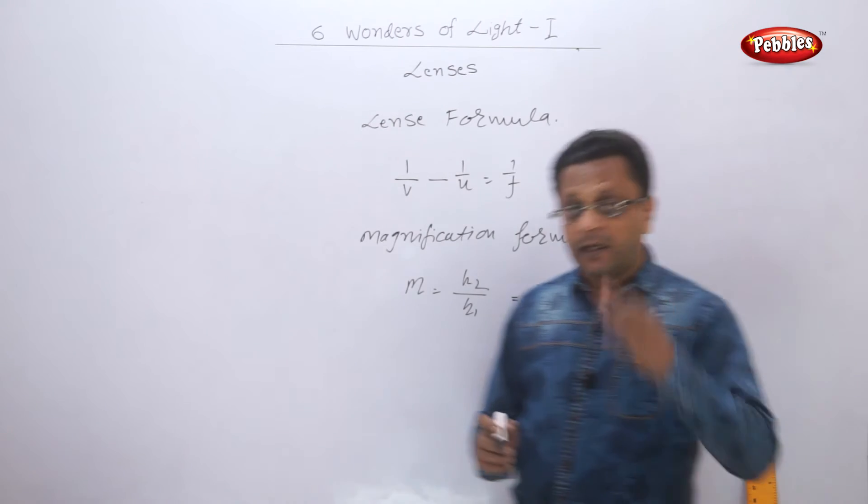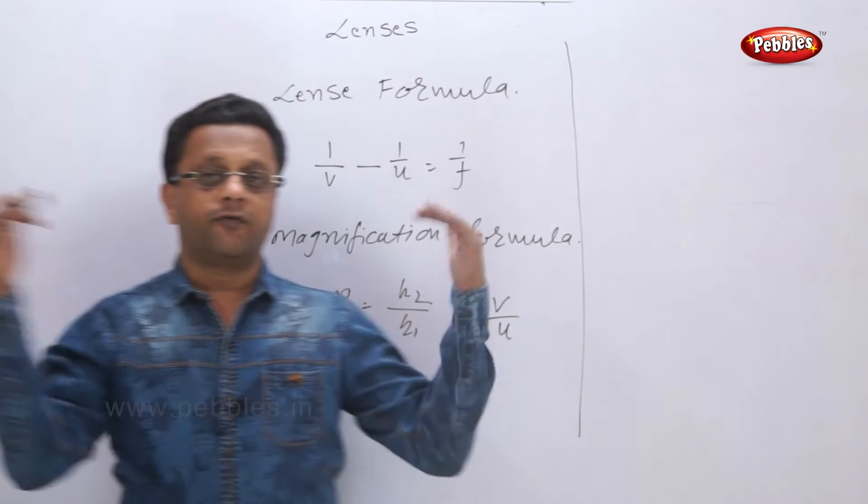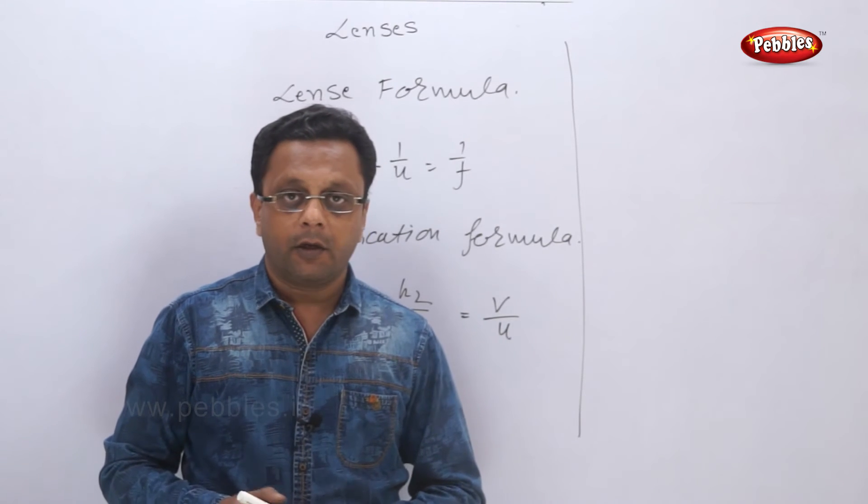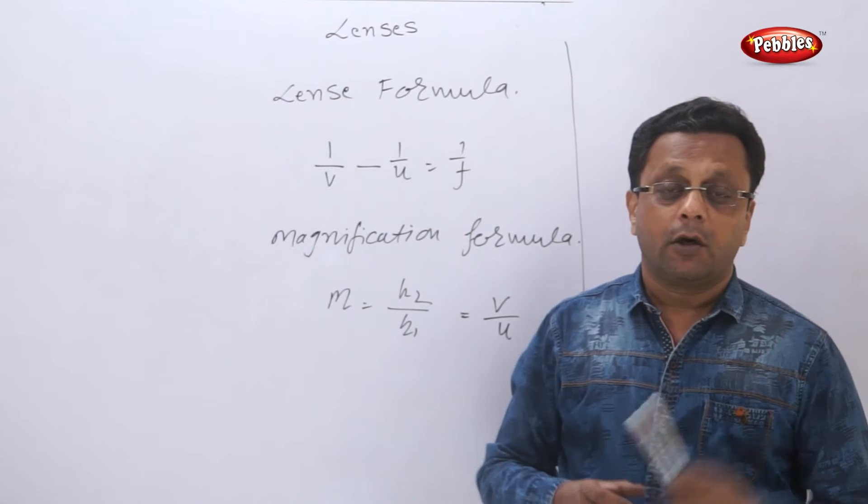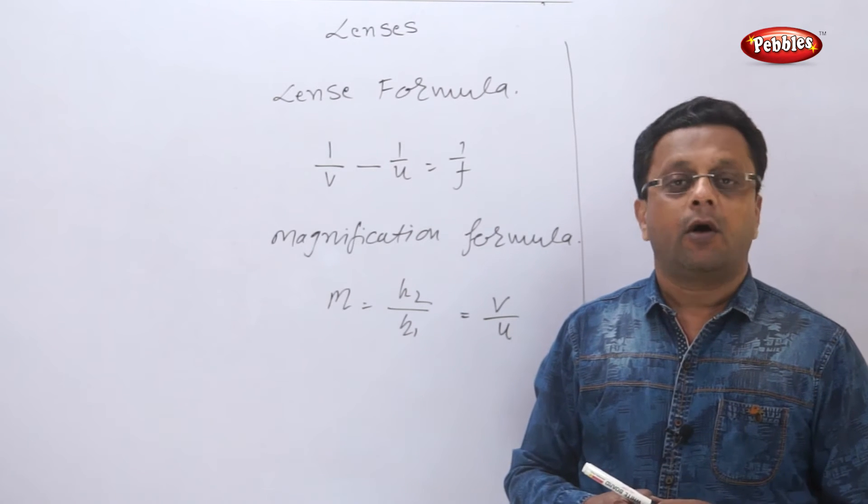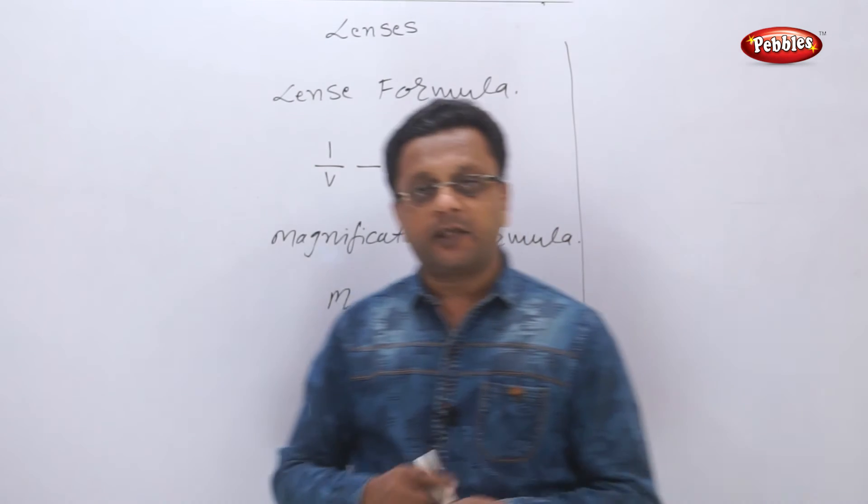We know that convex lenses converge the rays. Now this convergence is highly dependent on the focal length of the lens. If the focal length is shorter and the object is placed closer to f1, what will happen?